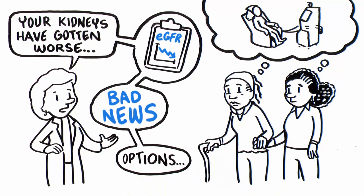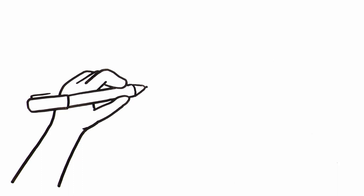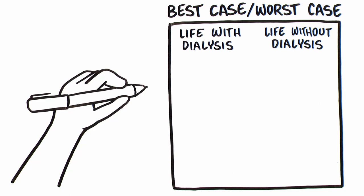Next, introduce the graphic aid. For Gladys, you are presenting two options, life with dialysis and life without. For each option, draw a box and a star connected by a vertical line.